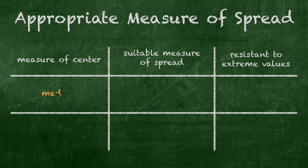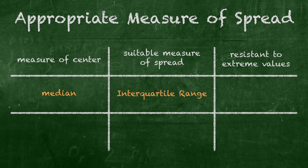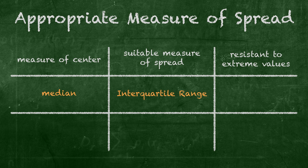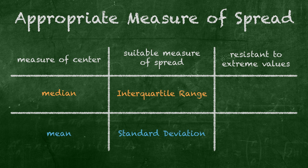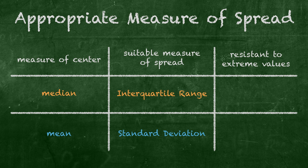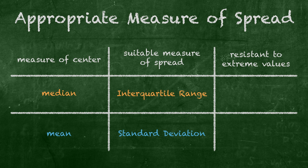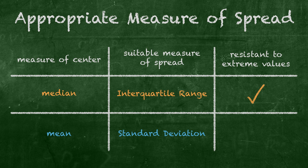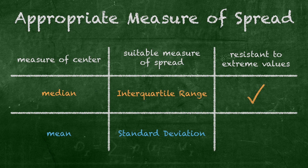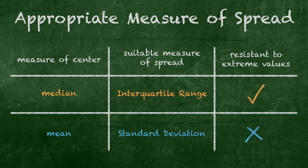If we use the median, we're likely going to use the interquartile range, or IQR, as our measure of spread. But if we use the mean, we're going with standard deviation, the standard deeve. And the logic behind that choice? Simple, because the quartiles are calculated using the median, and the standard deeve is calculated with the mean. Like the median, IQRs are resistant to extremes in the data. On the other hand, like a weak immune system, standard deeve is not resistant to extremes, because it uses the mean in its calculation.